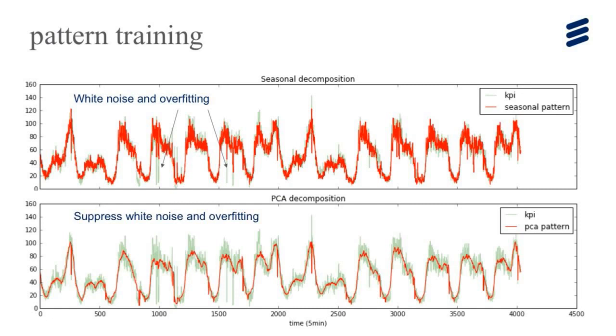But this is our approach. We managed to suppress white noise and overfitting with only two weeks training data. Here the red curve is the trained pattern from our approach, and the green behind is the original training data. So how can we denoise this pattern?